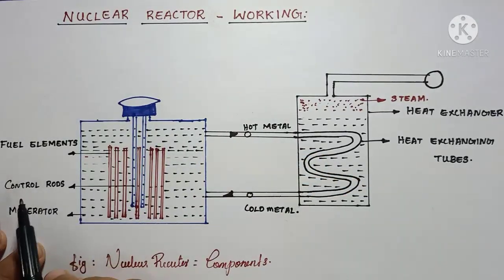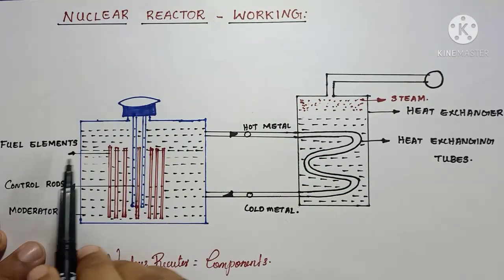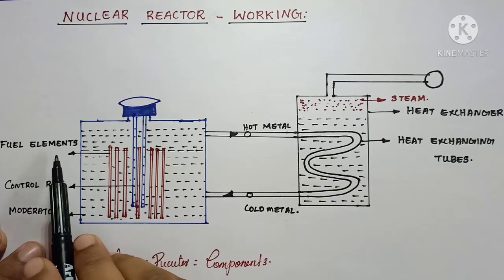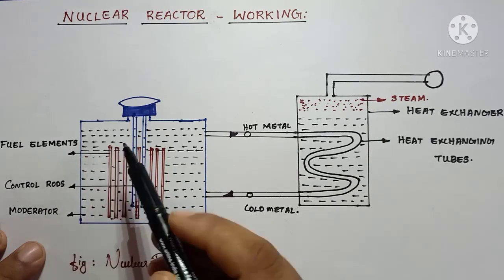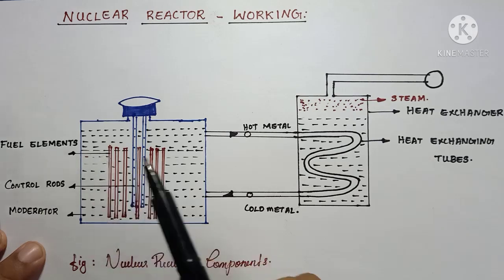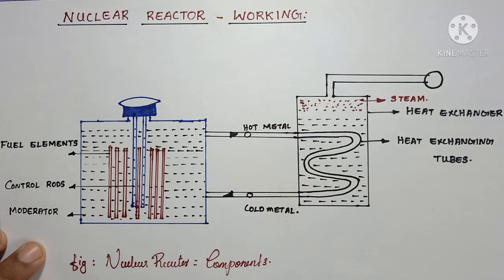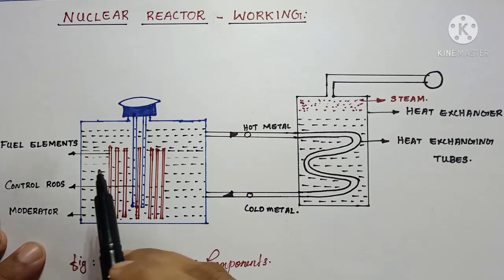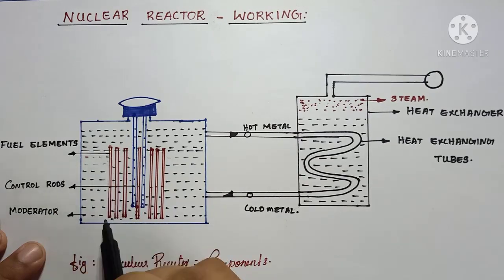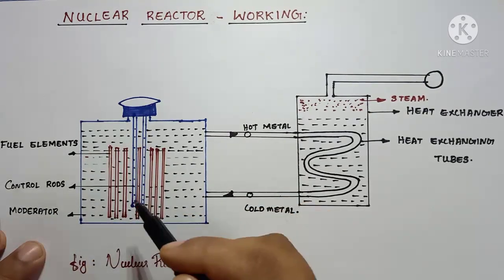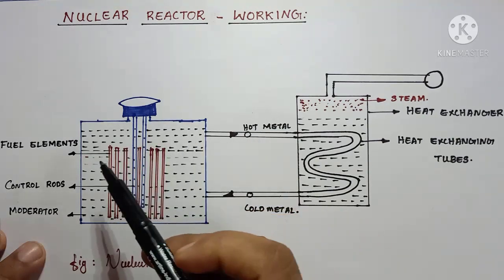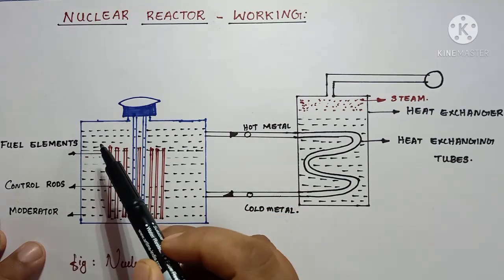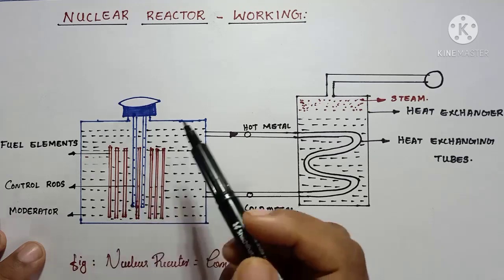One more important point is that the diameter of the fuel element is normally one centimeter. These are the major important points about nuclear reactor. The basic requirements are fuel elements, control rods, and moderators.